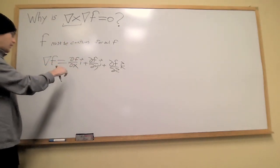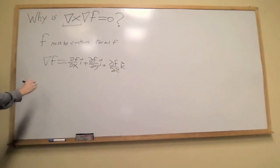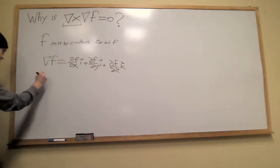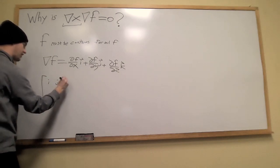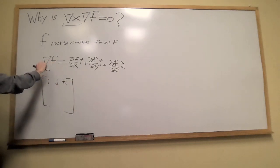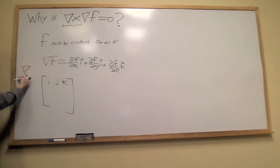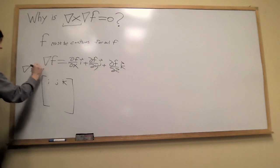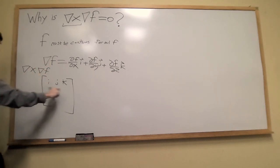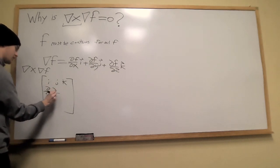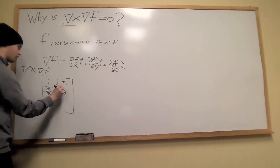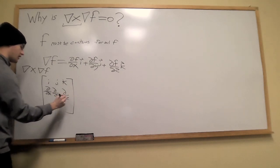So we start now. The determinant of the curl matrix would be i, j, k, just the unit vectors in the top. If we're doing del cross gradient f, then del is the middle line. So partial partial x, partial partial y, and partial partial z.